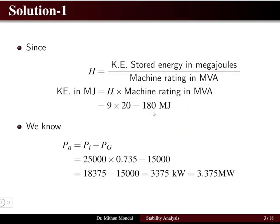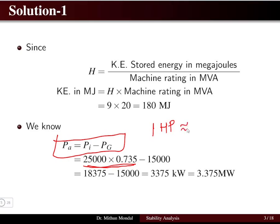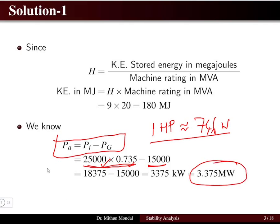The accelerating power is the difference between mechanical and electrical power. The input is 25,000 horsepower, converted using 1 HP ≈ 0.746 kW (using 0.735 here), giving 25,000 × 0.735 minus 15,000 kW, resulting in an accelerating power of 3.375 MW. If mechanical and electrical power were equal, the accelerating power would be zero.